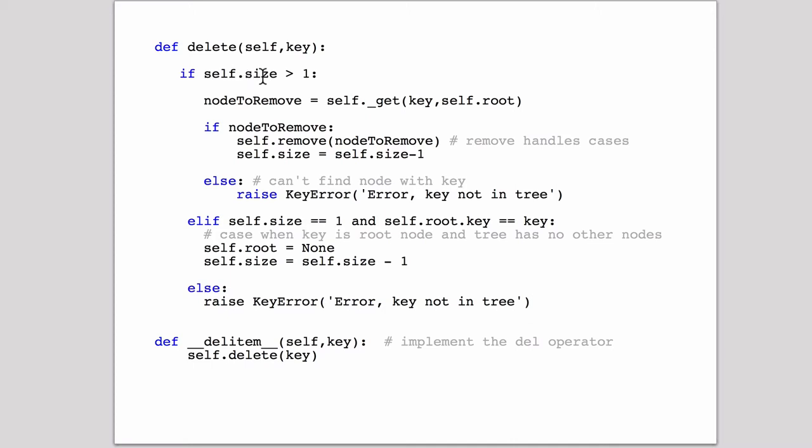Now, if the size is exactly one, if the size is equal to one and the root key is equal to the key, that means the tree only has one node and we're deleting it because it matches the key. In which case, we set the root to none and we decrease the size. If the size is exactly one and it doesn't match the root, then we raise a key error. And then we have a special method to delete the operator for delete in Python, which just calls the delete method we just did.